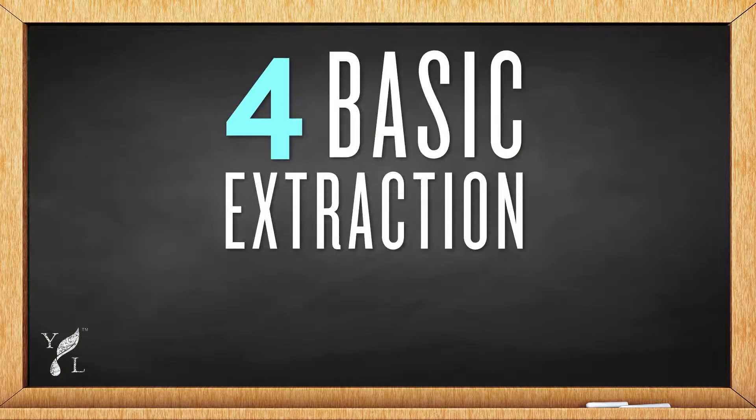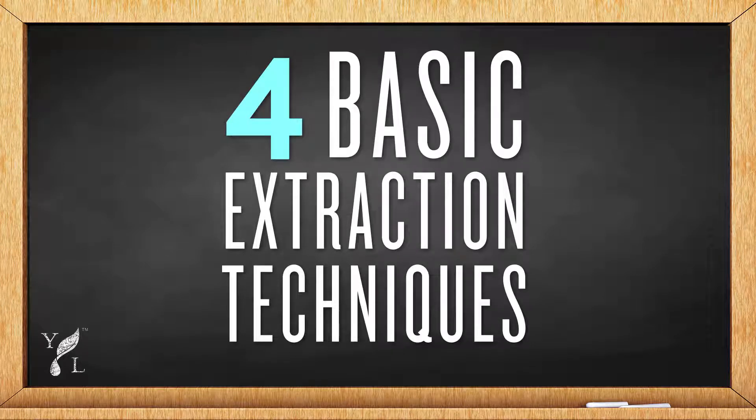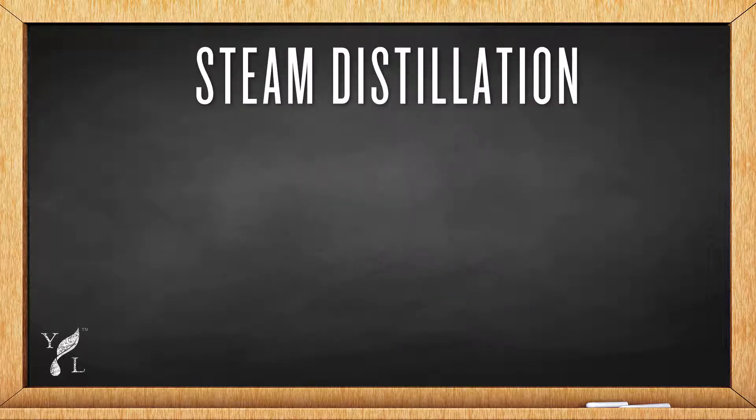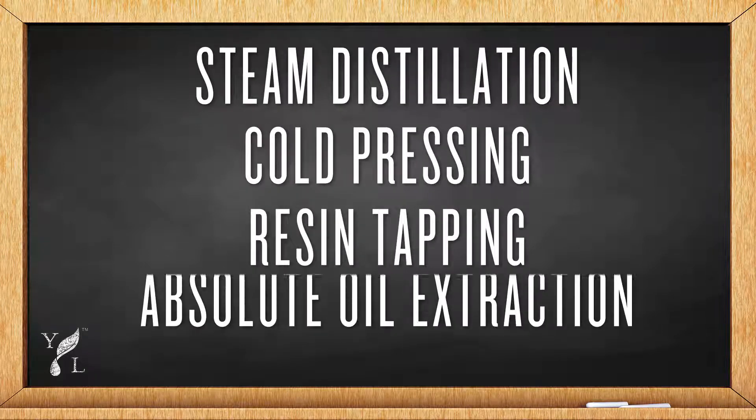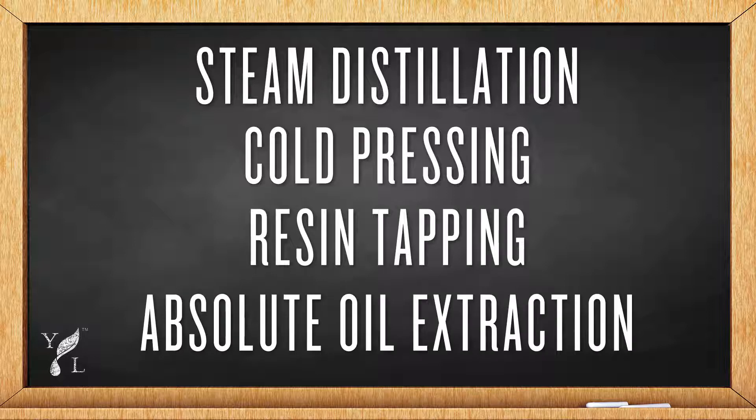In this video, you will learn how essential oils are extracted. You may wonder how essential oils are extracted from plants. Four basic extraction techniques exist: distilling, cold pressing, resin tapping, and absolute oil extraction, and I'd like to cover each of these in detail.